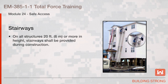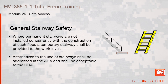Stairways: On all structures 20 feet or more in height, stairways shall be provided during construction. Where permanent stairways are not installed concurrently with the construction of each floor, a temporary stairway shall be provided to the work level. Alternatives to the use of stairways shall be addressed in the AHA and shall be acceptable to the government-designated authority.